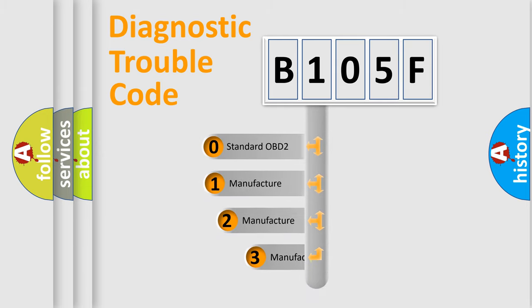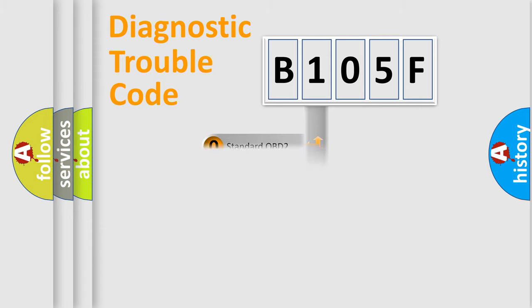If the second character is expressed as zero, it is a standardized error. In the case of numbers 1, 2, or 3, it is a more specific expression of the car-specific error.